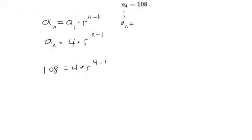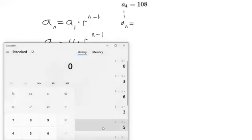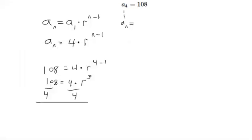So this is a little algebra equation. We can first simplify the exponent. It's r to the 4 minus 1, so I'm going to write that as r to the third power. Then I'm trying to get r by itself, so I'm going to divide 4 from both sides. That gives us 27.